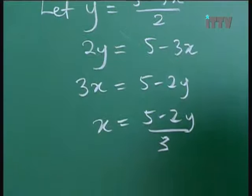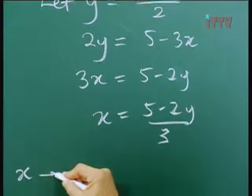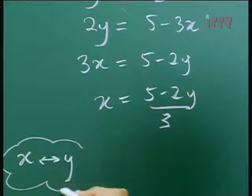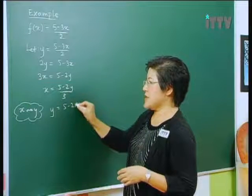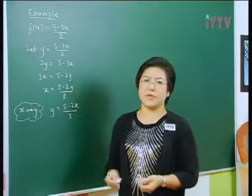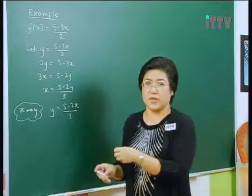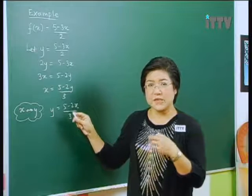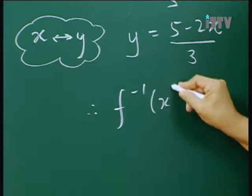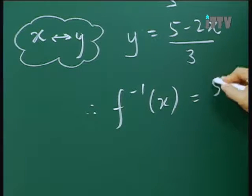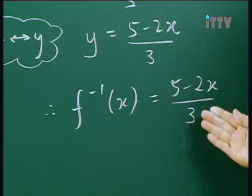The next step is, in my opinion, the most important step when finding inverse functions, and that is to swap the letters x and y: x becomes y, and y becomes x. This expression is actually the inverse function, meaning it is the function that will change the image back into its object. Since we are finding the inverse function, we give it the proper notation and change y back into f⁻¹(x). So the inverse function for our original f(x) is f⁻¹(x) equals (5 minus 2x) over 3.